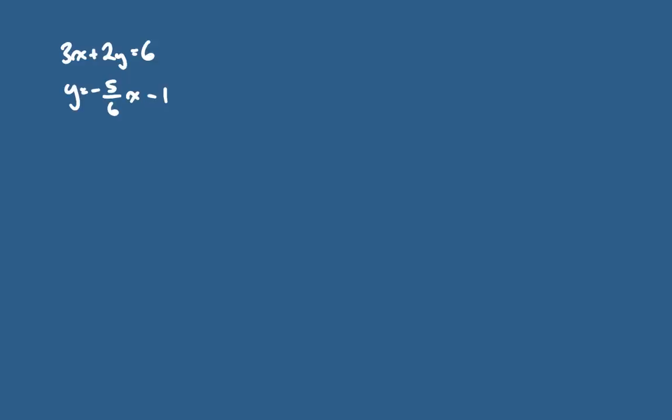Here's a second linear system: 3x plus 2y equals 6, and the second linear function y equals negative 5/6 x minus 1. If we solve this by substitution, we're going to either sub equation 1 into equation 2, or sub equation 2 into equation 1. Which one is easier?